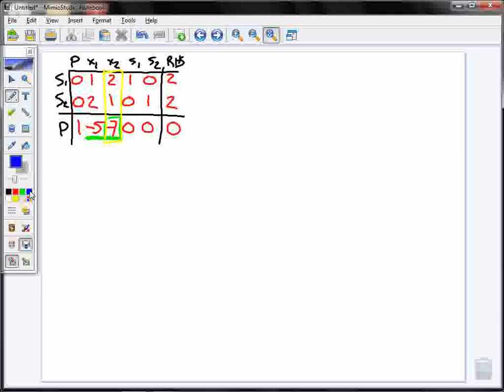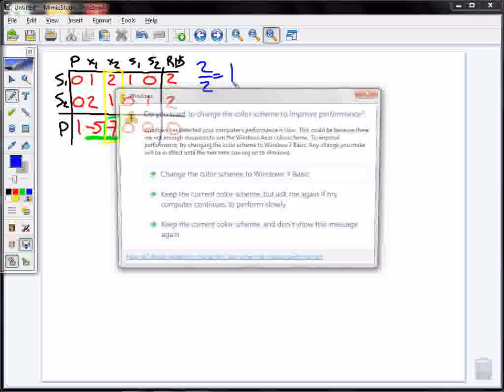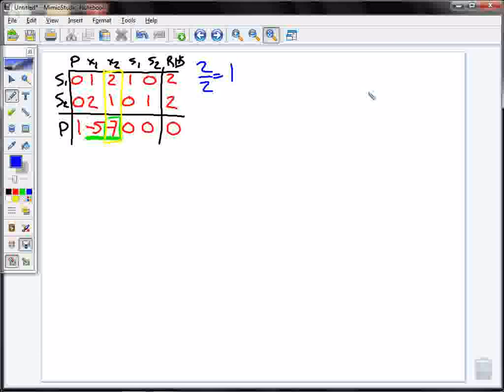So you see I have 2 divided by 2. That's my right hand side divided by my x2. So this equals 1. Here I have 2 divided by 1, and that's going to be 2. Now that I've done this I look for my smallest number, and my smallest number here is 1. So this will be my pivot point. My pivot point is going to be 2.